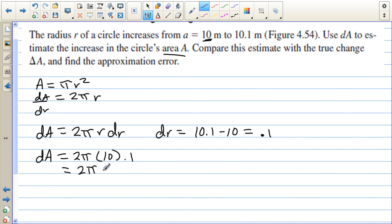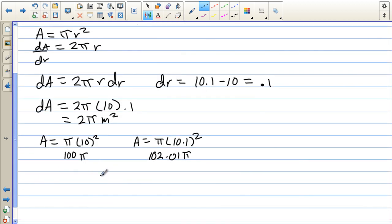Well, if we take, let's say, the area of the original is π times 10². And when we change the radius from 10 to 10.1, we get π times 10.1². So we have 100π for the original area. And for 10.1 squared, we have 102.01π. Now, if we subtract these two from each other, we get 2.01π. So there's the actual difference between the two areas.